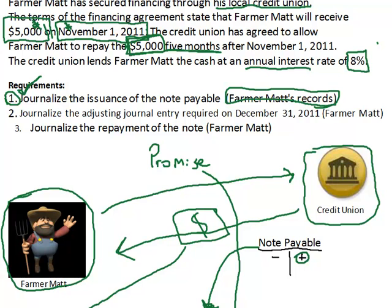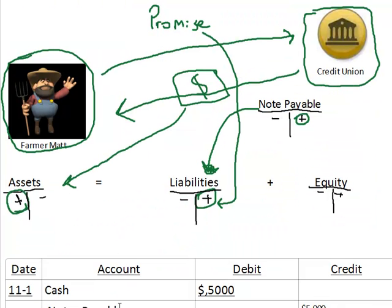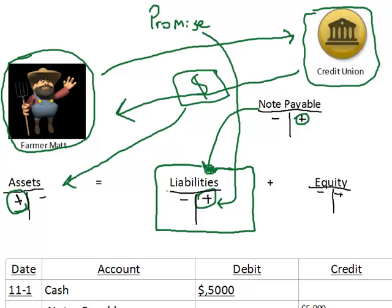That wraps up the first requirement — journalizing the issuance of the note payable. By doing that, we've reflected in the financial records for the farmer that they now have an obligation. It's a short-term obligation, which tells an investor, a banker, and an owner some important information about liquidity.